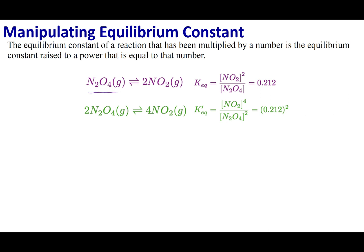Let's start out with this equation right here. N2O4 is going to be in equilibrium with two NO2s. If you wanted to write the equilibrium constant — products over reactants raised to the stoichiometric coefficients — in this case if I give you the equilibrium constant being 0.212, then that has established what this equilibrium is for this equation.